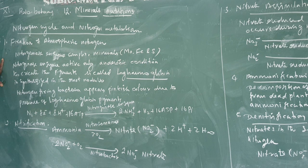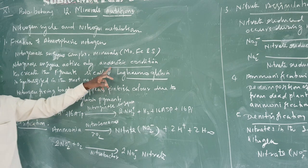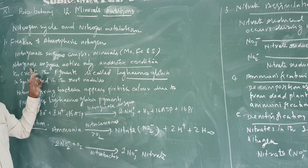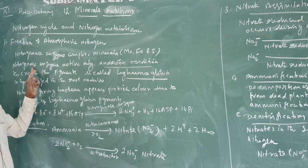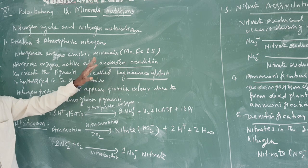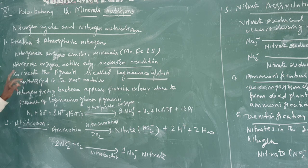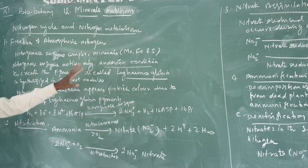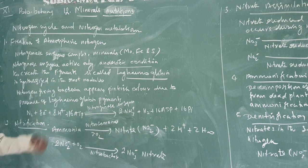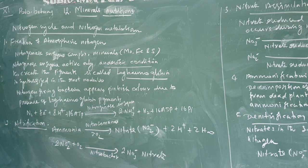The nitrogenase enzyme complex and minerals — the nitrogenase enzyme is active only under anaerobic conditions. This is very important for the nitrogen cycle and nitrogen metabolism. Under anaerobic conditions, a pigment is created called leghemoglobin, which enables the activity of the nitrogenase enzyme.